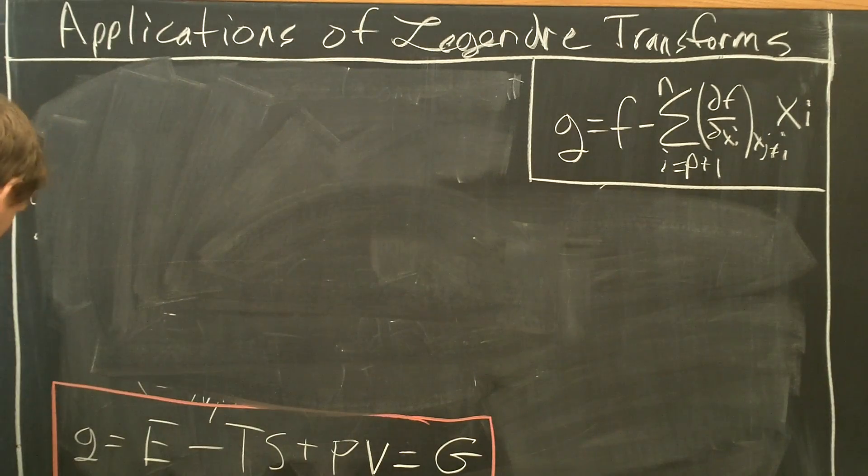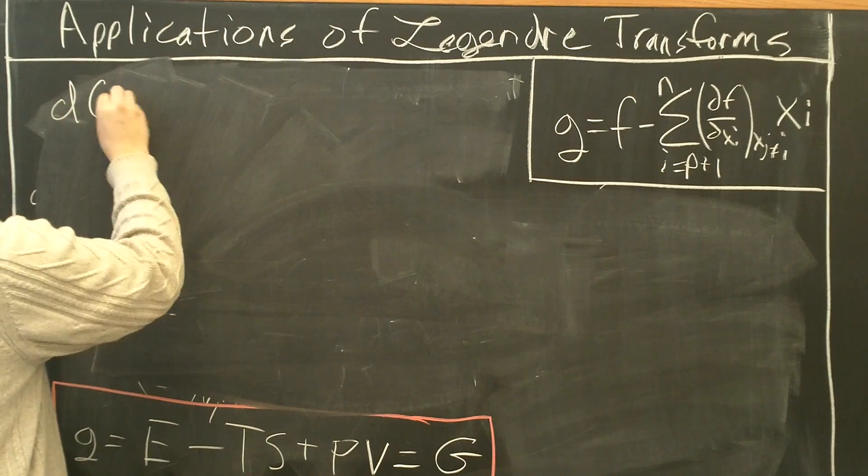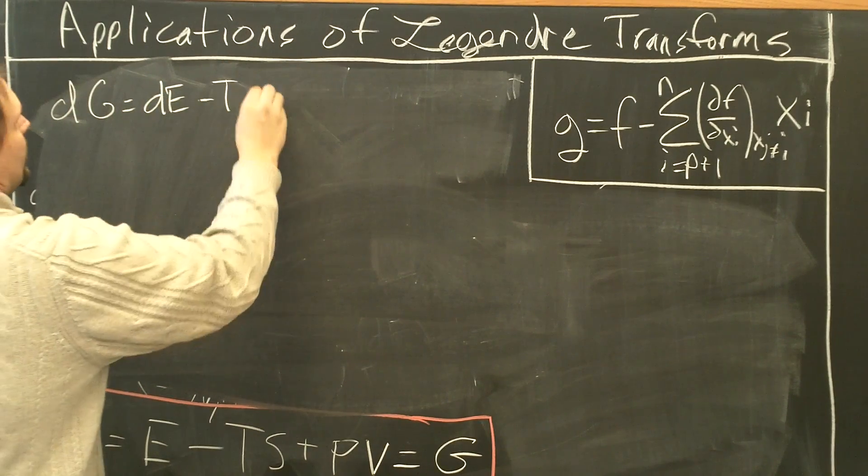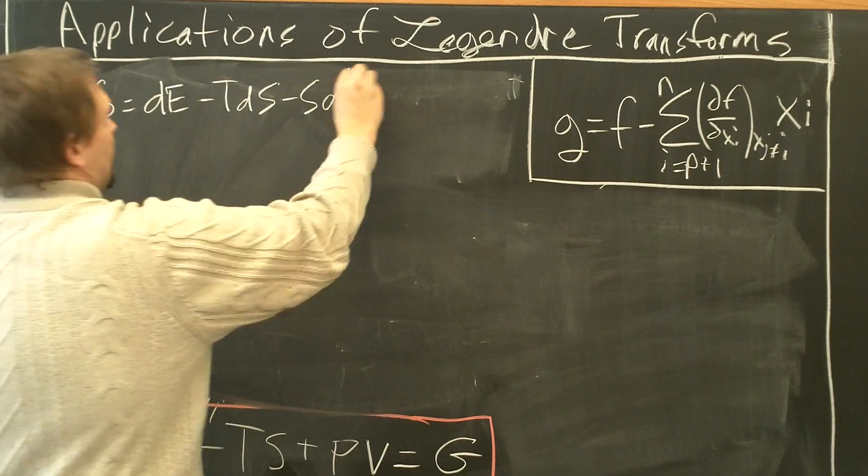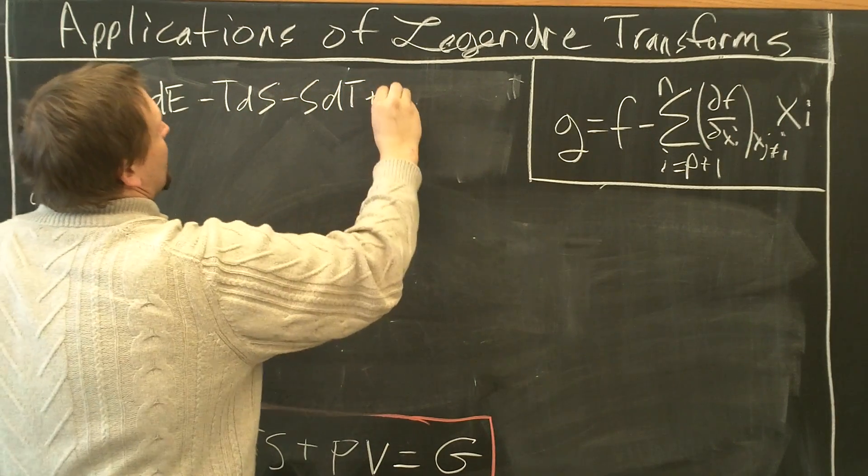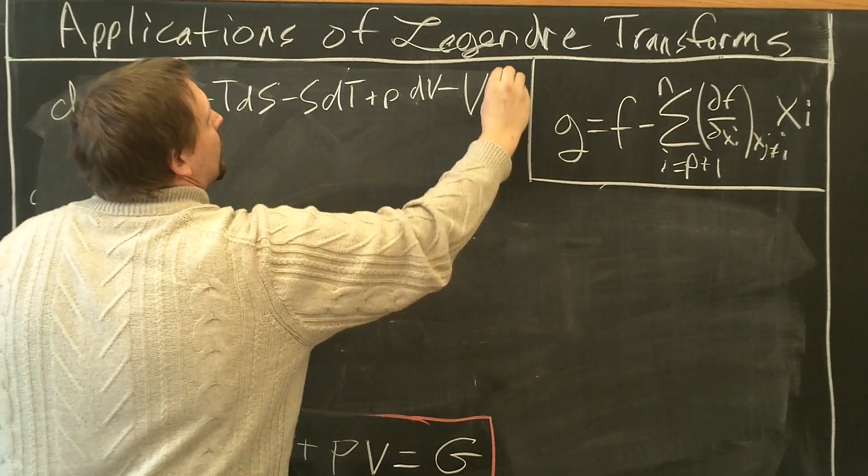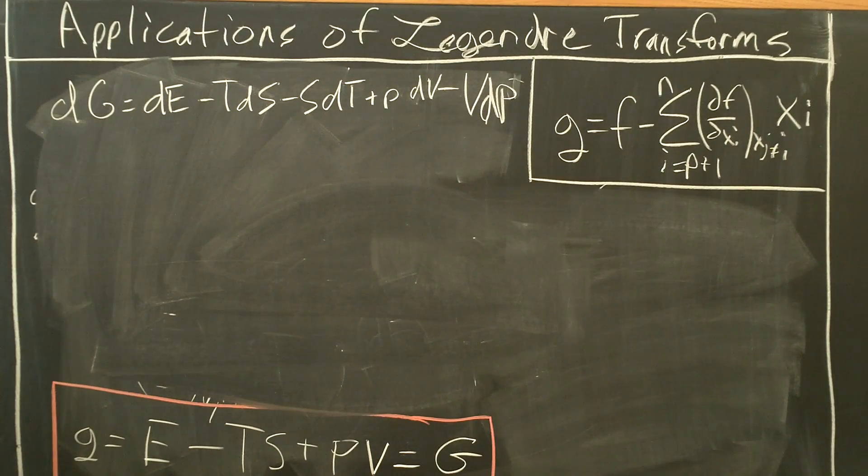So cap G. dG equals dE minus T dS minus S dT plus P dV plus V dP. Sorry about the handwriting there.